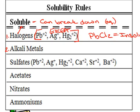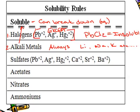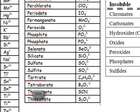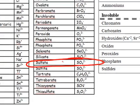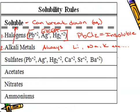The second solubility rule talks about alkali metals — alkali metals are all soluble. So whenever we see lithium, sodium, potassium, etc., they're always going to be soluble. Now sulfates: if you don't remember what a sulfate is, we go to the back of our periodic table and find that sulfate is SO4. When we see something paired with SO4, it's soluble unless the cation is one of these six exceptions.